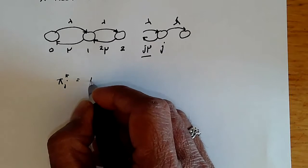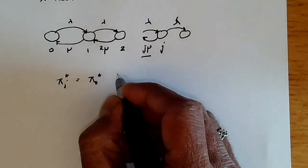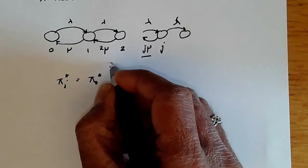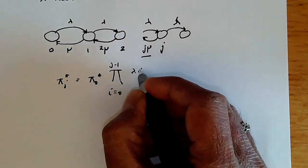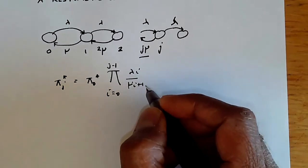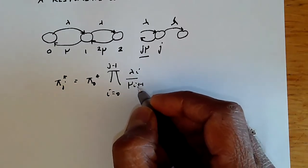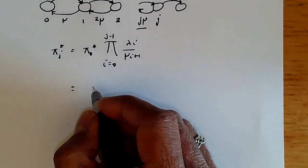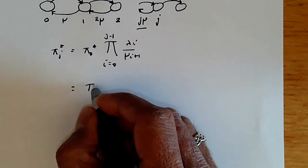Pi j star is given by pi 0 star, the product i equals 0 to j minus 1, lambda i by mu i plus 1. And we can plug in into here the values over here. So we get over here the pi 0 star.